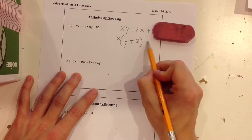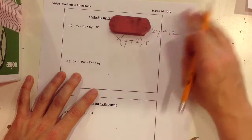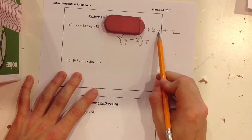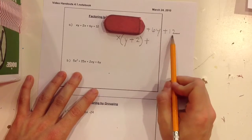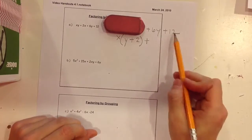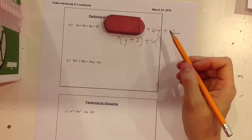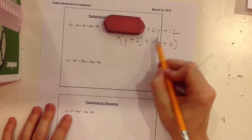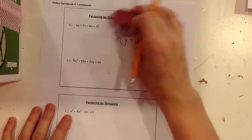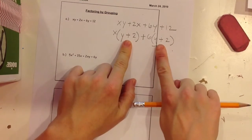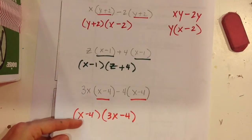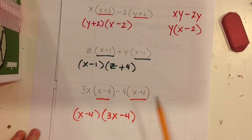Bringing down the plus sign, I do the same for the last two terms. What is the GCF of 6y plus 12? The biggest number that goes into both 6 and 12 is 6. Taking out a 6 leaves y from the first term and 2 from the second, since 6 goes into 12 twice. Notice the parentheses match — both groups give (y + 2). That matching parenthetical is our GCF, and when we factor it out, we have it in factored form.